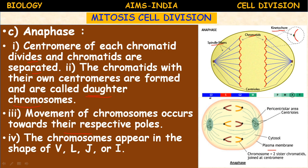In the M phase, we have completed prophase and metaphase, and now we are in anaphase. In anaphase, the centromere of each chromatid divides and the chromatids are separated. The chromatids with their own centromeres are formed and are called daughter chromosomes. These daughter chromosomes are pulled to opposite poles and attain different alphabetical shapes: V, L, and similar forms.